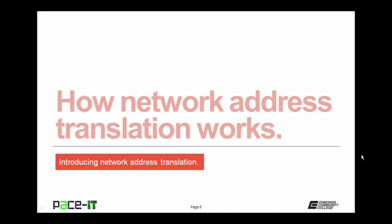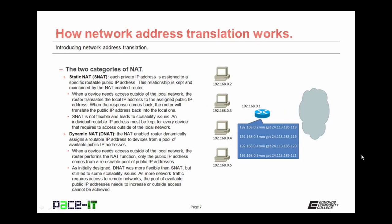Now that we've covered the purpose, let's talk about how Network Address Translation works. There are two categories of NAT. First up is Static NAT. With Static NAT, each private IPv4 address is assigned to a specific routable public IPv4 address. This relationship is kept and maintained by the NAT-enabled router. When a device needs access outside of the local network, the router translates the local IPv4 address to the assigned public IPv4 address, and when the response comes back, the router will translate the public IPv4 address back into a local one.